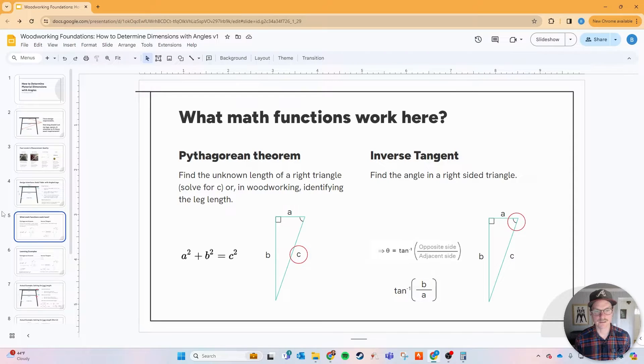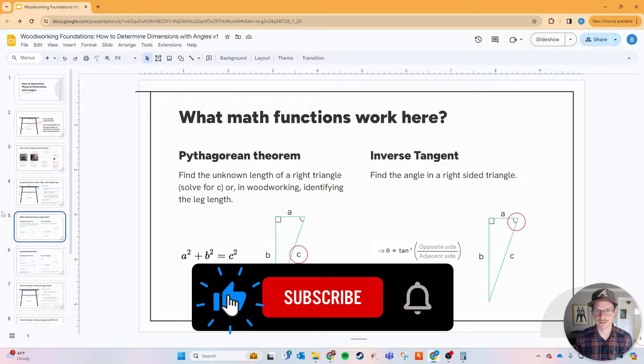Now there are two math functions that we can leverage here to get that leg length and those angles. The first is Pythagorean Theorem. This allows you to get an unknown length of any right triangle which we're solving for c. In woodworking we want to identify what's that leg length. When we take a squared plus b squared equals c squared and we solve for c, we can get that leg length. The other component is what is that angle when it comes to that same right-sided triangle that I need to make a miter cut against. That's where we use inverse tangent.